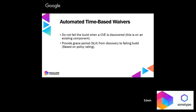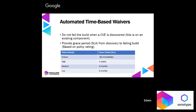What automated time-based waivers does is it does not fail the build when a CVE is discovered on existing components — we still don't allow brand new components with issues. Instead of failing immediately, we provide a grace period — we call it an SLA — from discovery to when we fail the build, based on the policy ratings. If the security issue is critical, we break the build straight away. If it's high, we give them two weeks — because back a few years ago we were working in fortnightly iterations, so two weeks was a good enough grace period. For medium and low, we picked those numbers out because they seemed like a reasonable amount of time.